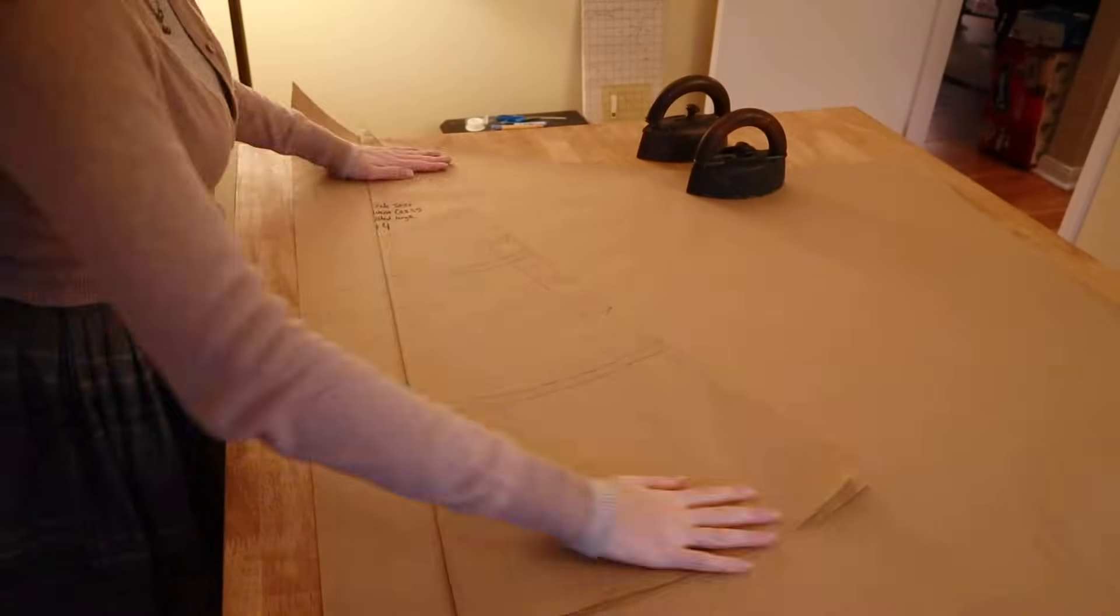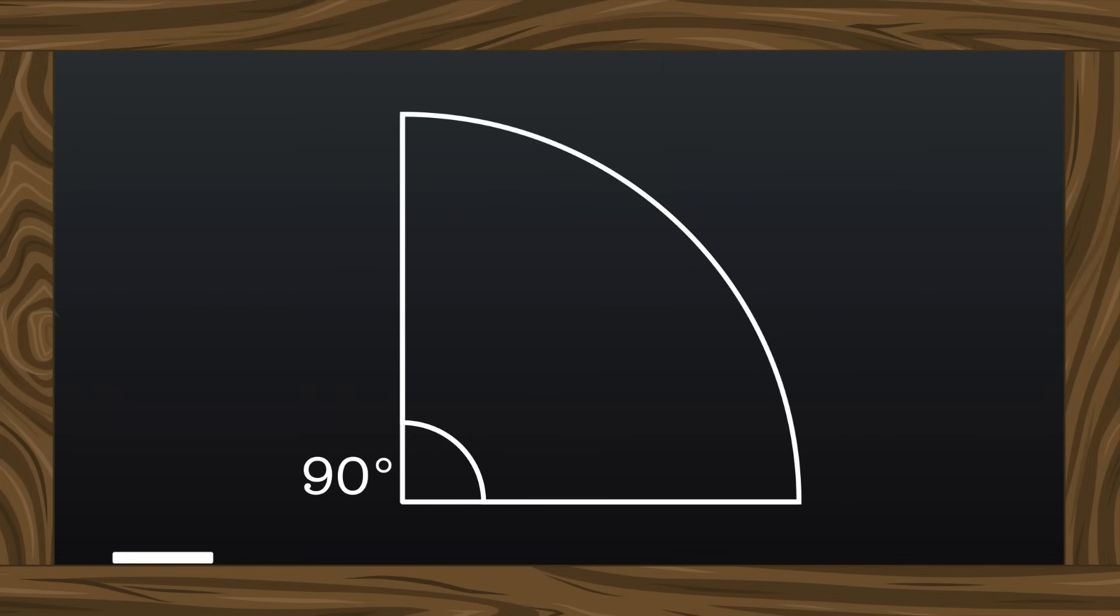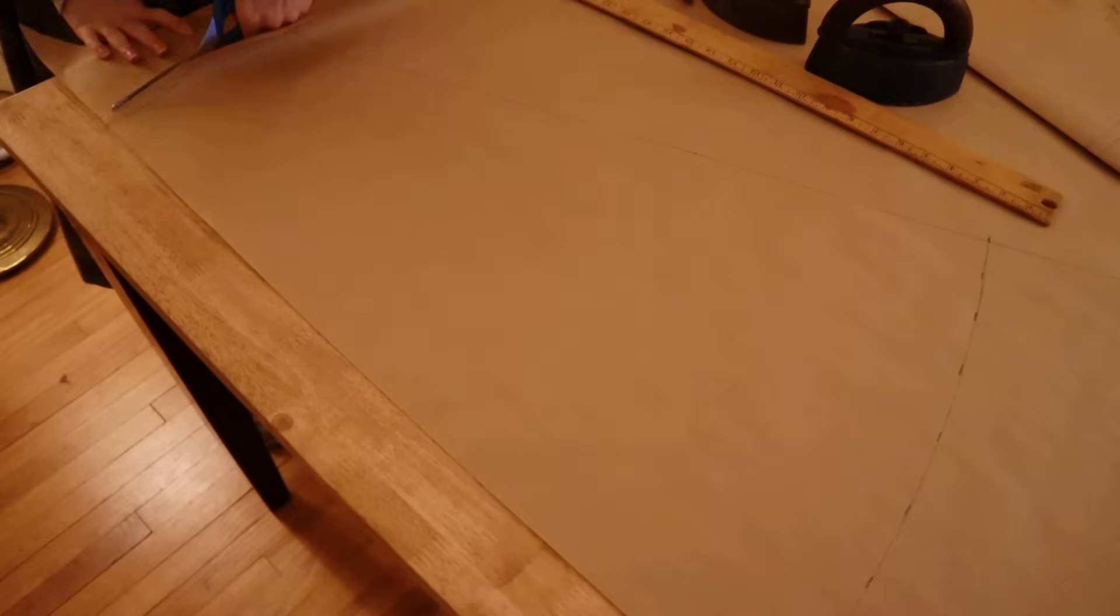To pattern them, you need a 22.5 degree angle, or you can take a right angle and fold it in half for an eighth, and then fold that in half to find 1/16th. Then they can be patterned in the usual manner.